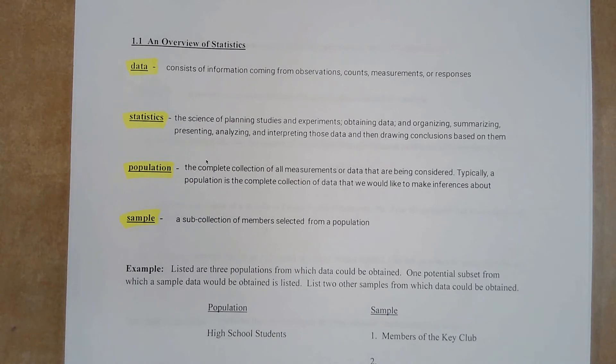We just have data that comes from observations, counts, measurements, responses. Statistics is a science of planning studies and experiments, obtaining data, organizing, summarizing, presenting, analyzing, and interpreting the data and drawing conclusions.